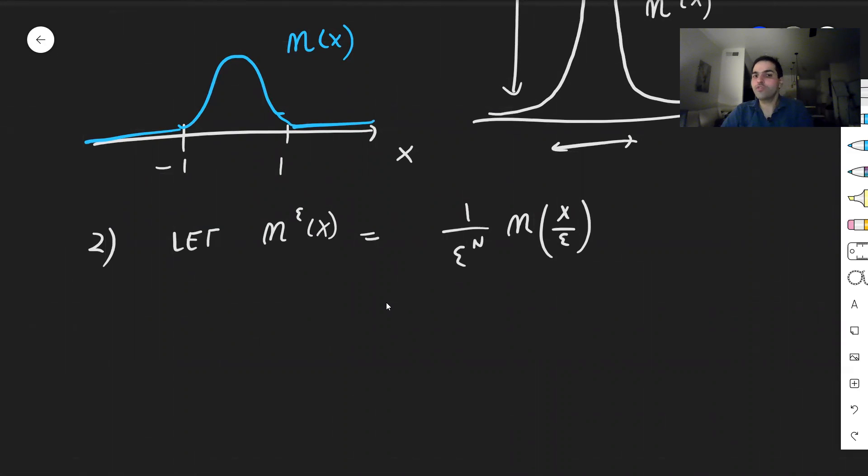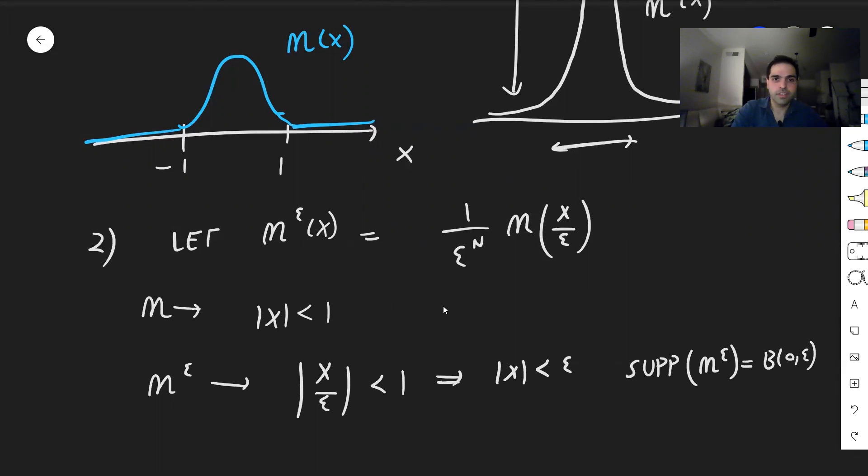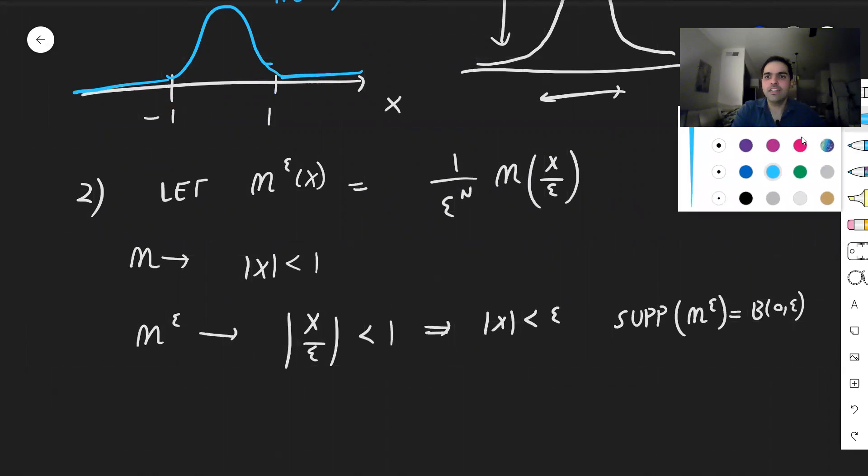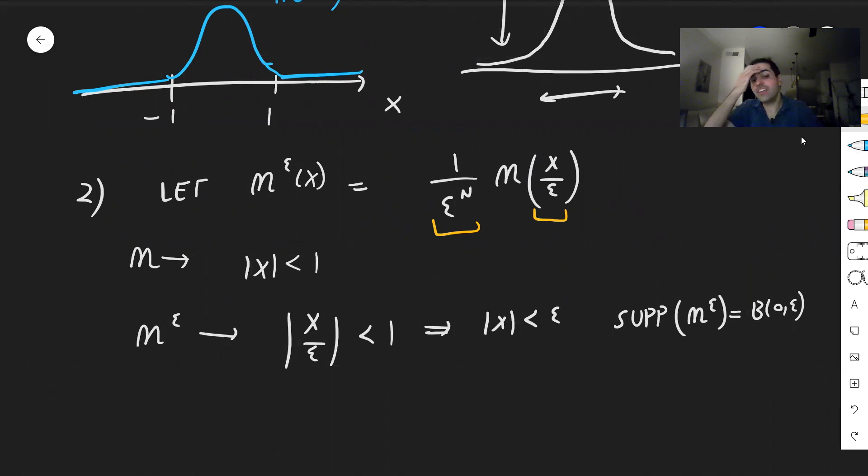First of all, let's see on which x this is defined or for which x it is non-zero. So notice the support of eta is when absolute value of x is less than 1. So here the support of eta epsilon is when absolute value of x over epsilon is less than 1, so x is less than epsilon in absolute value. And so in particular, the support is precisely the ball centered at zero in radius epsilon. So that explains why we have this x over epsilon. And this factor is precisely so that the integral of eta epsilon is one. So we can do a simple change of variable and show that in fact the mass of eta epsilon is preserved, just like the Dirac delta.